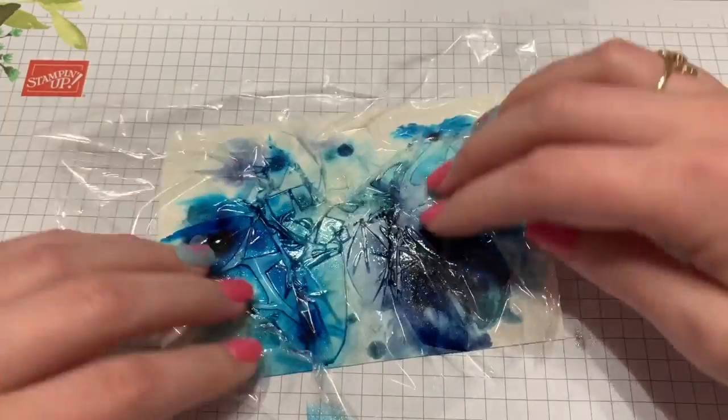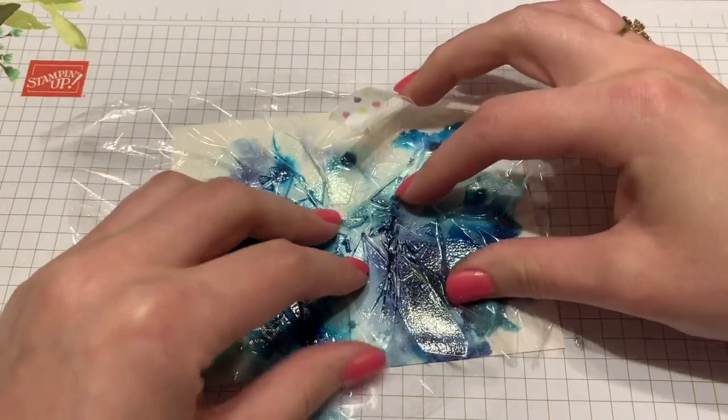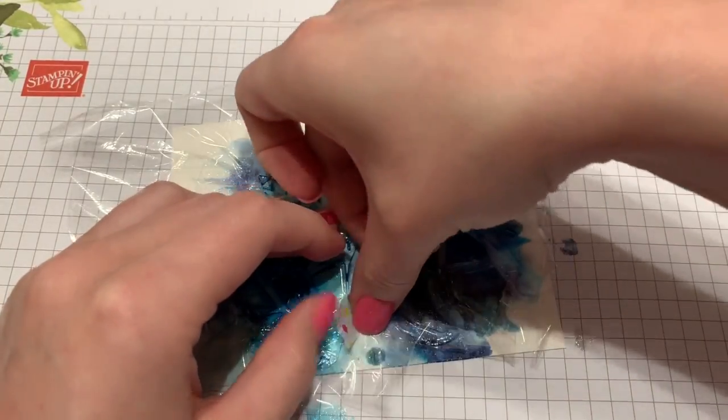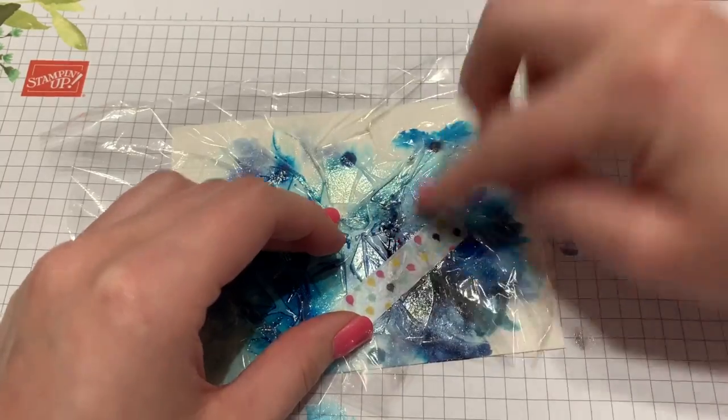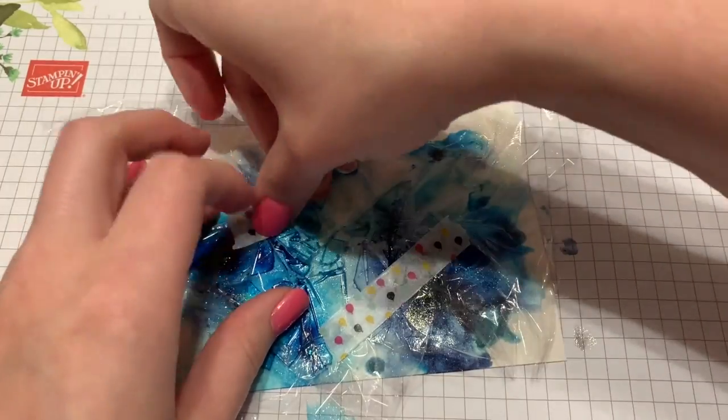Sometimes it kind of pops back up, that saran wrap. If you have some washi tape, you can tape the saran wrap where you like it, and that way you keep that design in that shape.